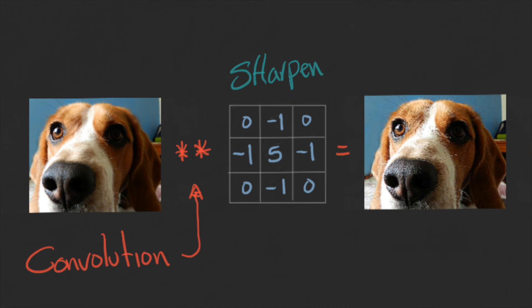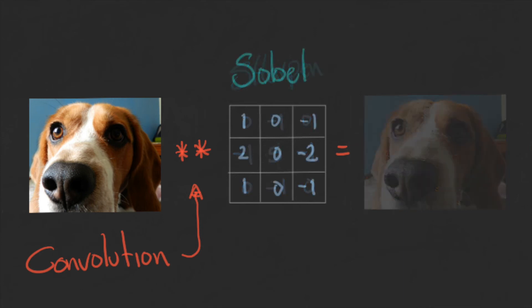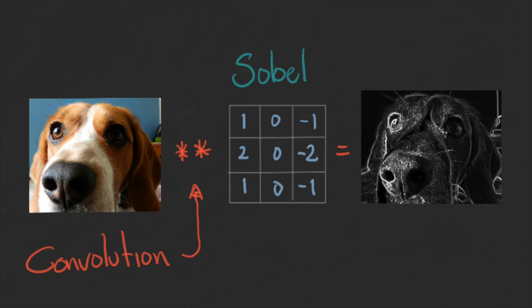Another common example is the Sobel operator. This kernel is positive in one side and negative in the other, using similar weights. This means that in a patch with constant values, the result will be zero. However, when we find a drastic change, then the result will be one. For this reason, the Sobel kernel is used as an edge detector.